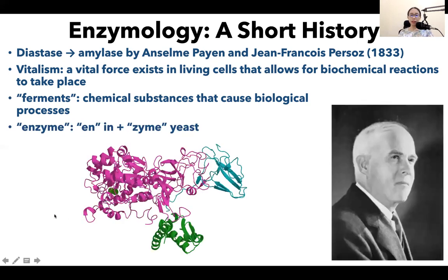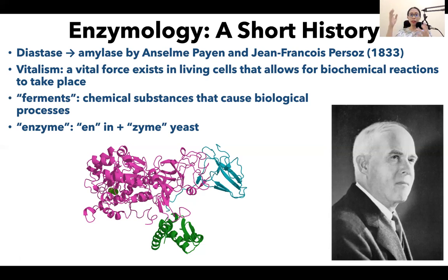In 1926, James Sumner was able to purify and crystallize urease, another enzyme. When you crystallize a protein, you can study its structure and determine the position of one atom relative to other atoms within the molecule. Upon studying the structure of urease, Sumner found that it is 100% protein — he saw the peptide bonds, the side chains of the amino acids, the N-terminal, and the C-terminal. His conclusion was that all enzymes are proteins.